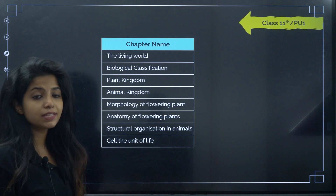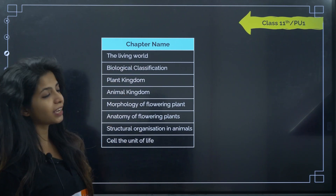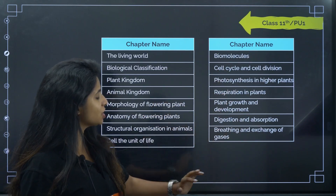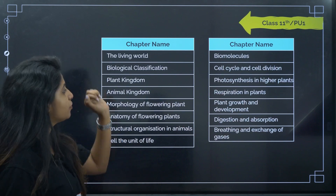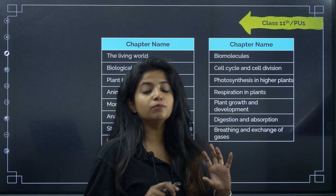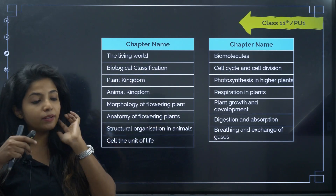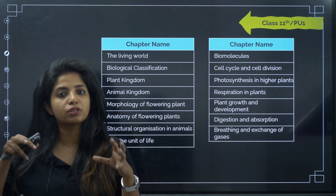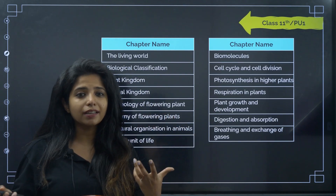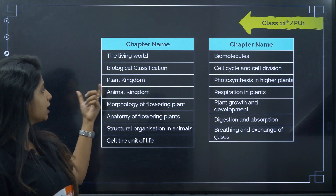Now let's talk about the 11th syllabus. It starts from 'The Living World,' covers 'Cell: The Unit of Life,' goes up to 'Breathing and Exchanging Gases,' and there's one more set I'll cover shortly. I want to highlight animal kingdom and plant kingdom — this is the most detailed version of these topics you will ever study. When I studied animal kingdom, I got an idea of what stream I wanted to choose — zoology or botany.